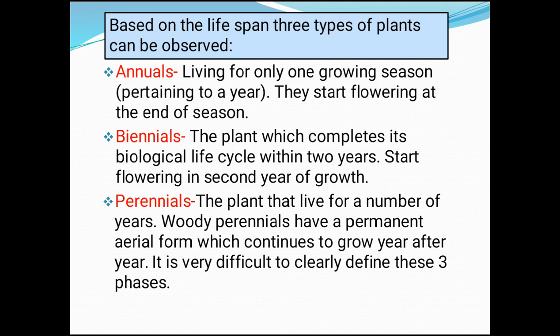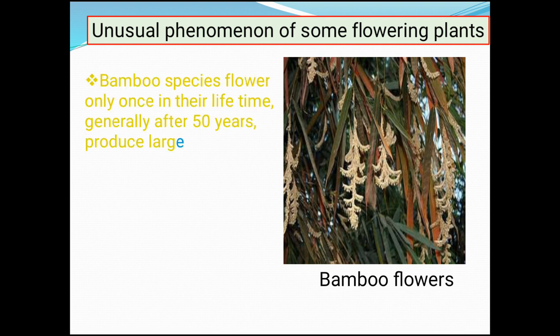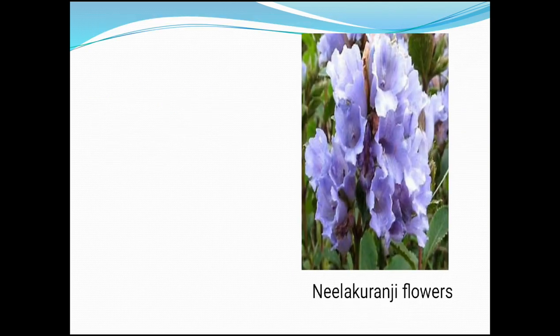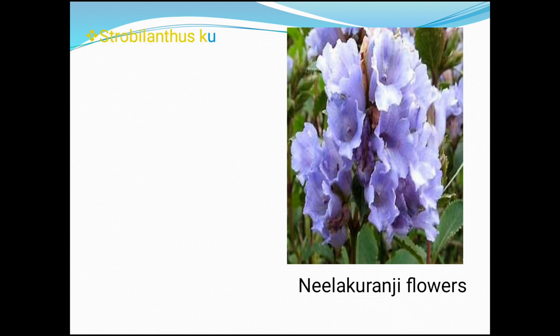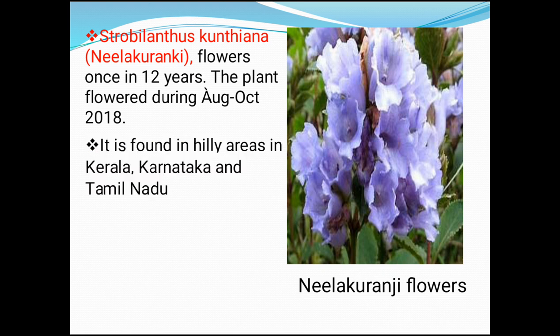It is very difficult to clearly define these three different phases of life. Let us see some unusual phenomena of flowering plants. One such example is bamboo — bamboo species flower only once in their lifetime, generally after 15 years, and they produce a large number of seeds and die. There is one more example: Neelakurangi, or Strobilanthes kunthiana. This plant flowers once in 12 years, during August to October, and is found in hilly areas of Kerala, Karnataka and Tamil Nadu.